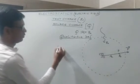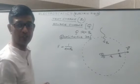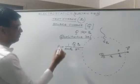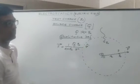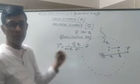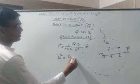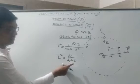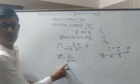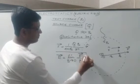Mathematically, electric field is defined as the limit as Q0 tends to zero — implying the test charge is vanishingly small and infinitesimally small — of F vector divided by Q0. This is the mathematical statement of electric field: the electric field at a point due to the source charge is defined as the electric force experienced per unit test charge placed at that point.